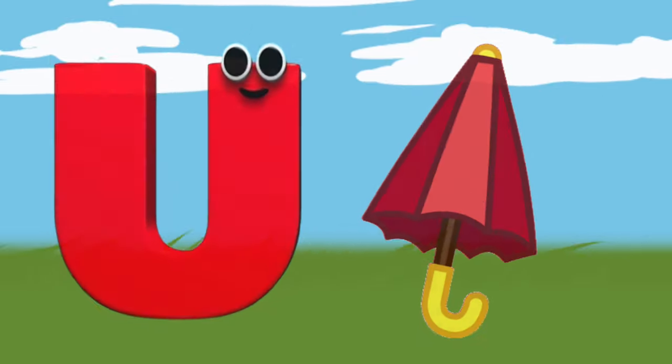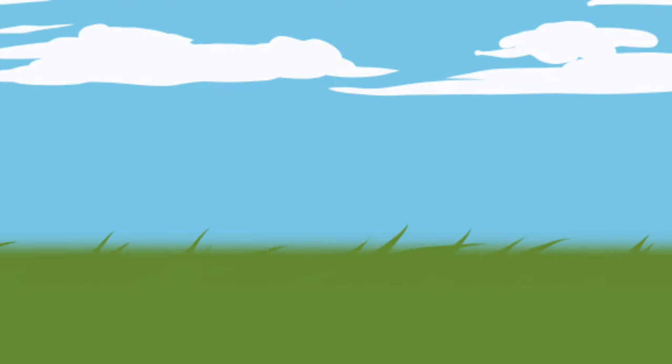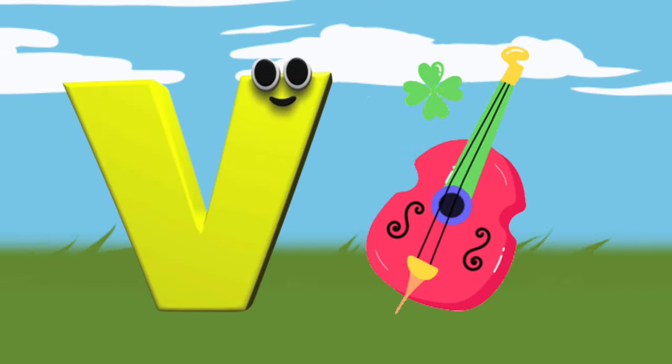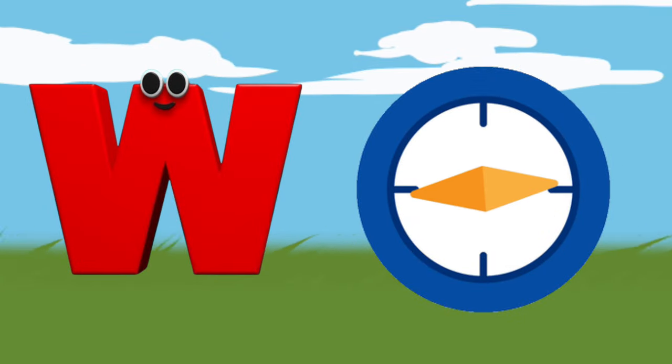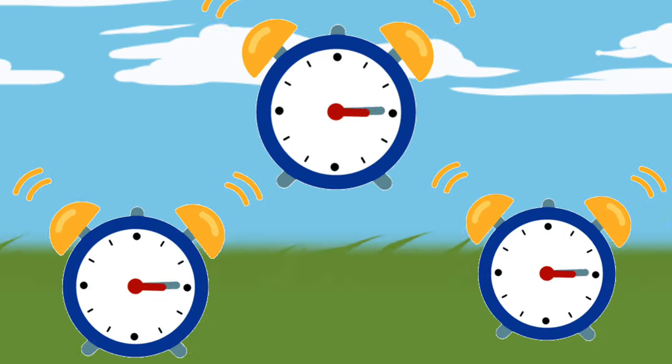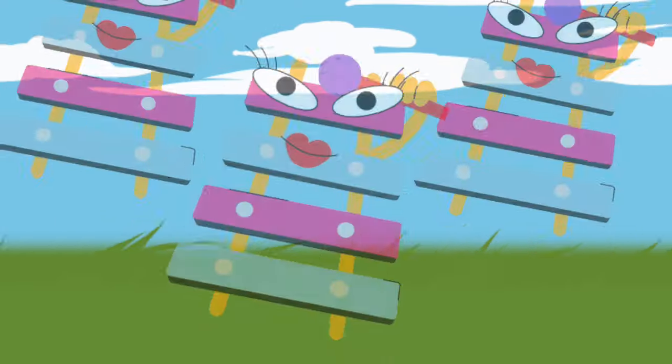U is for Umbrella, u-u-Umbrella. V is for Violin, v-v-Violin. W is for Watch, w-w-watch. X is for Xylophone, z-z-Xylophone.